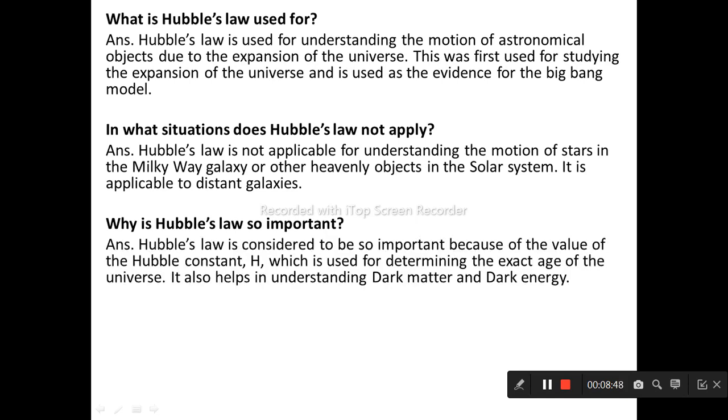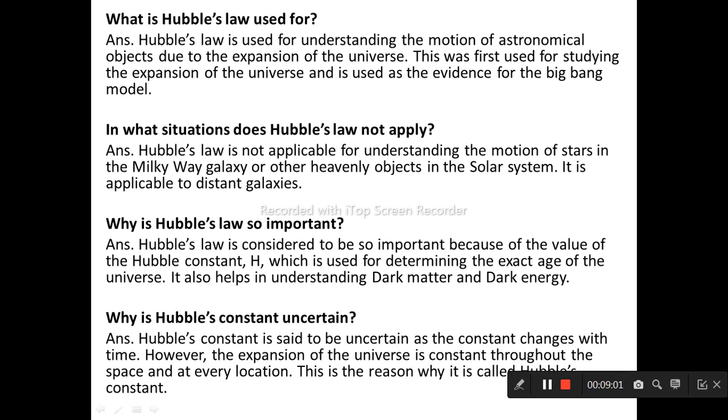Hubble's law is considered to be so important because the value of Hubble's constant is used for determining the exact age of the universe. It also helps in understanding dark matter and dark energy. Hubble's constant is said to be uncertain as the constant changes with time. However, the expansion of the universe is constant throughout space and at every location. This is the reason why it is called Hubble's constant.